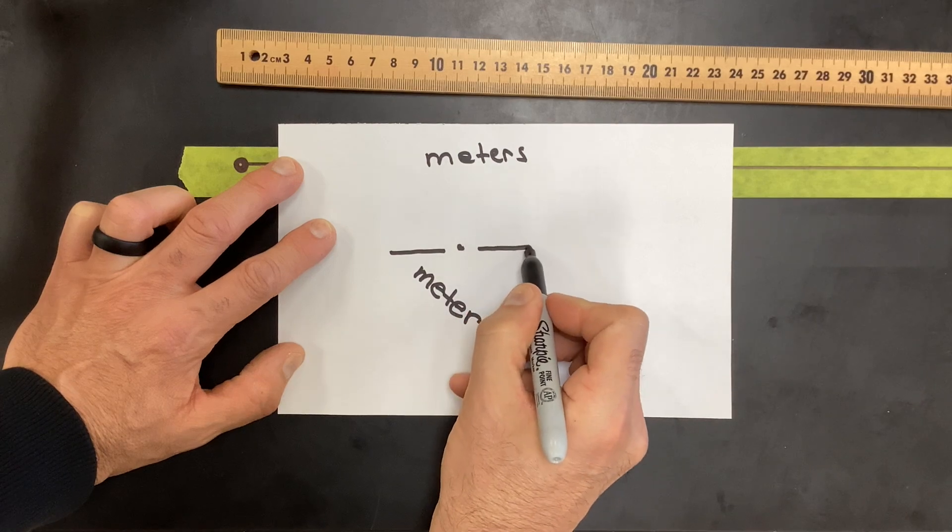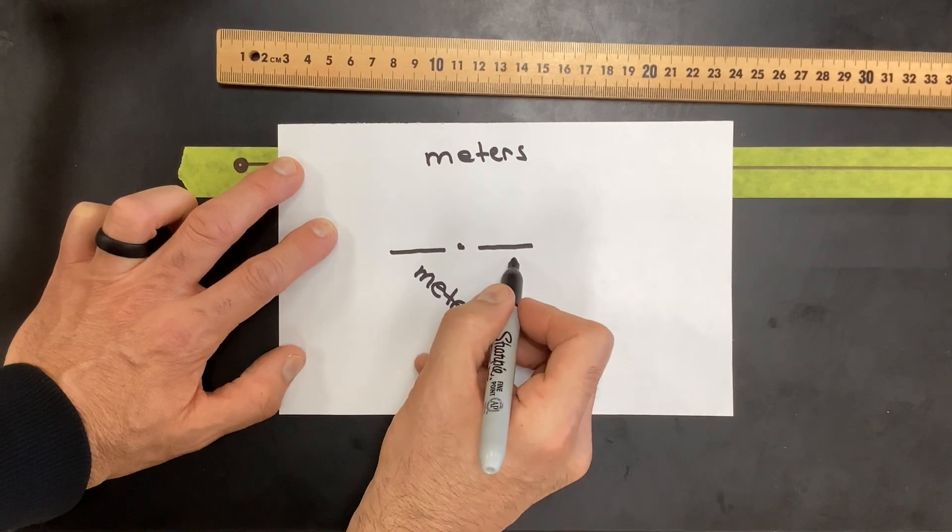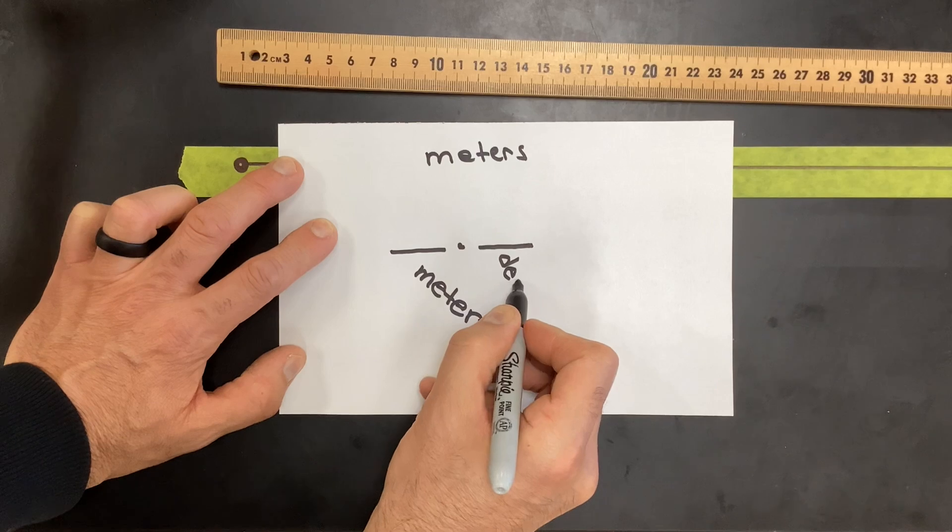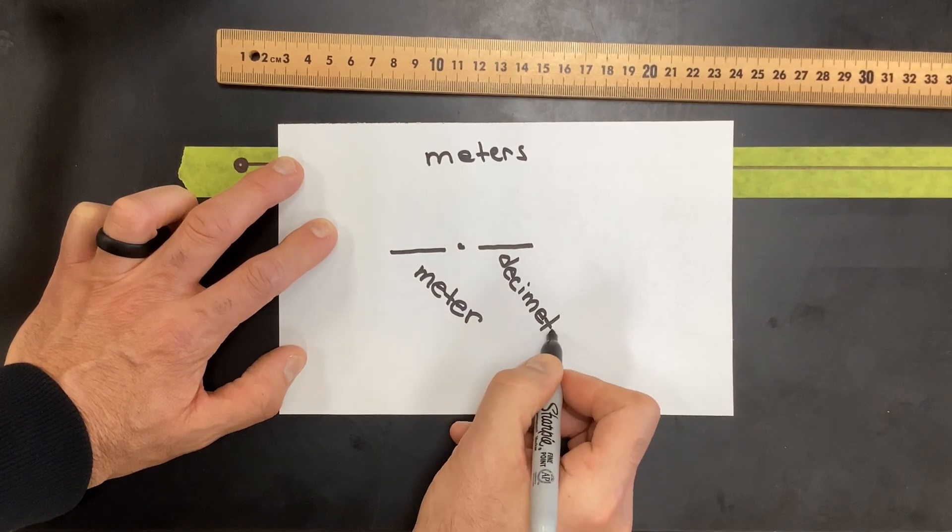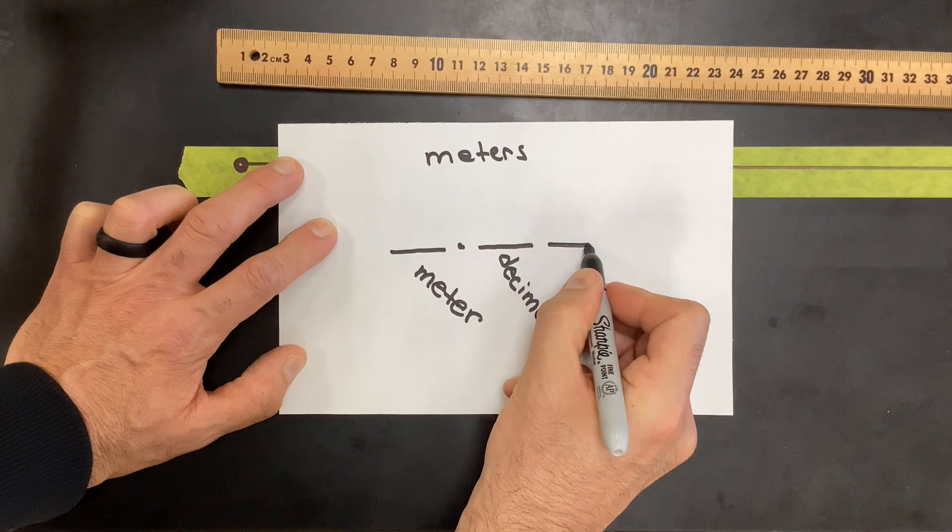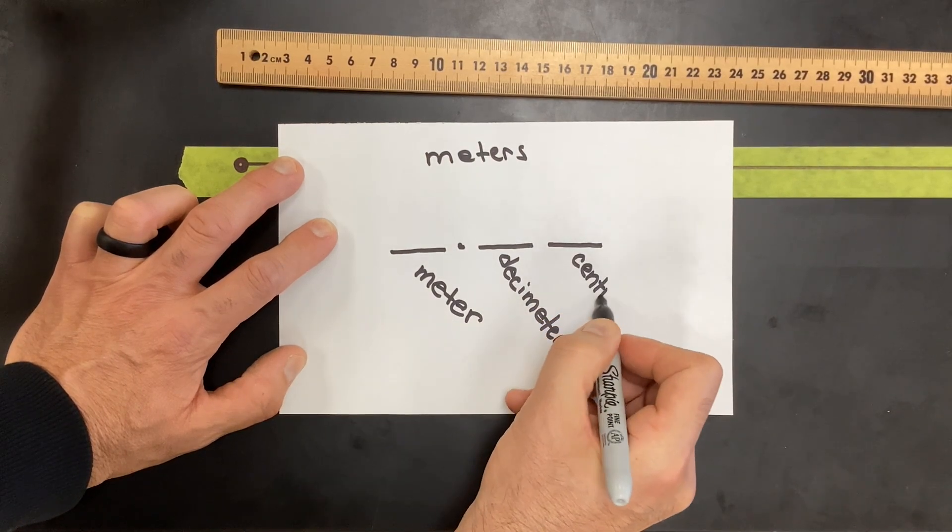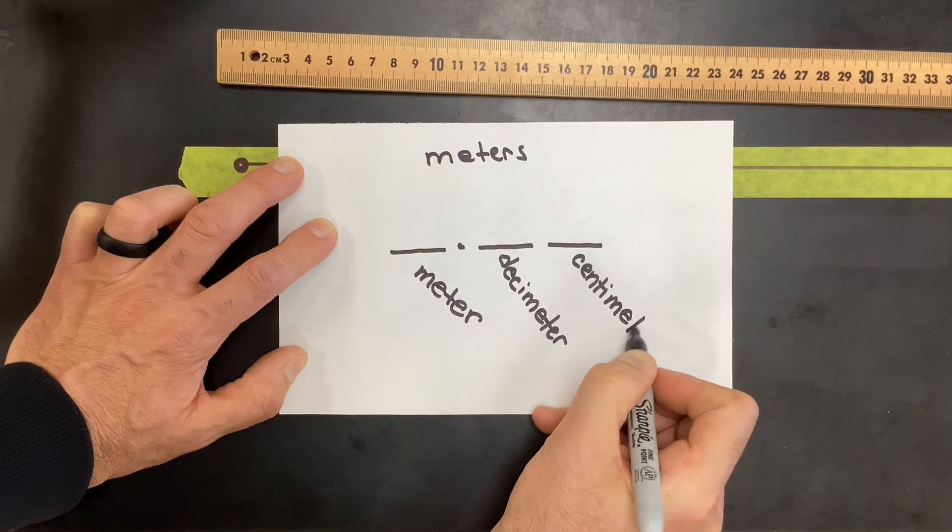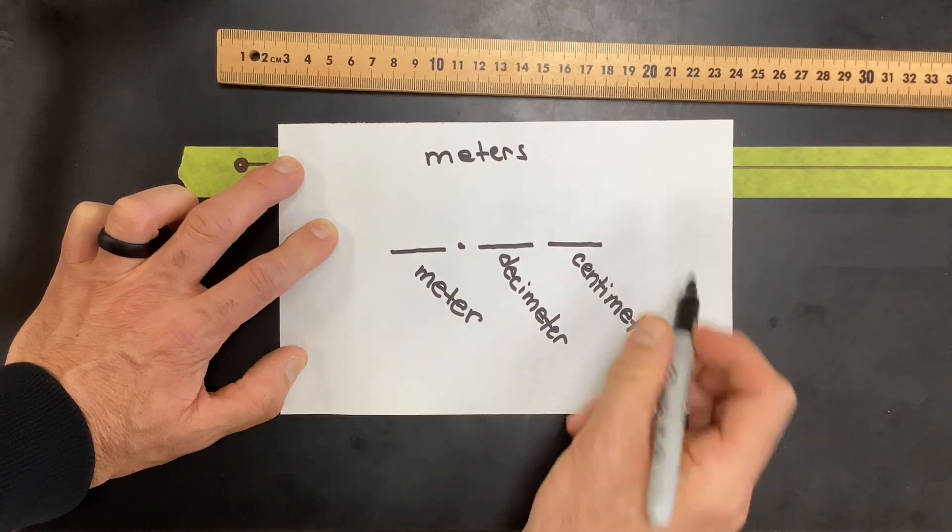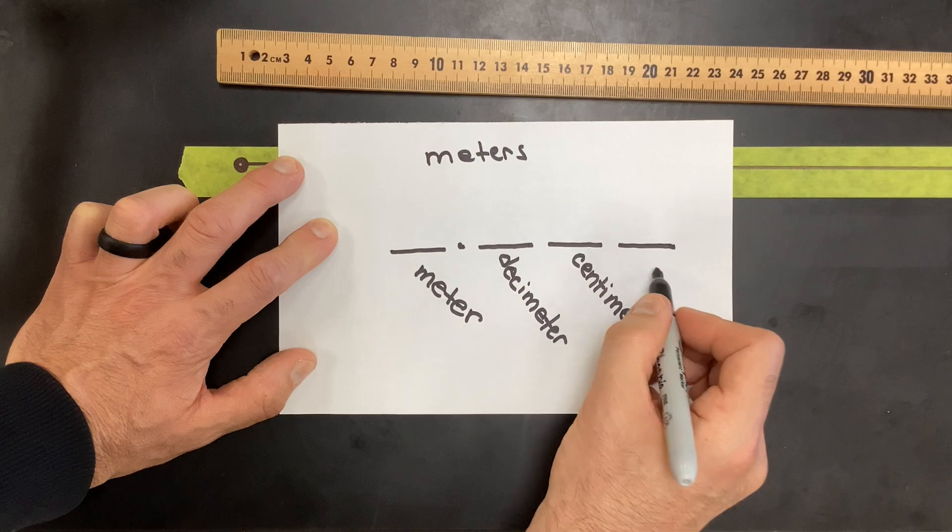This right here would be decimeter, which we're not going to really ever use. That would make this the hundredth position, which is going to be our centimeter, and maybe you're following along with me because this next position is going to be your millimeter.